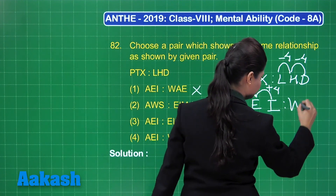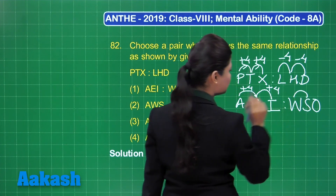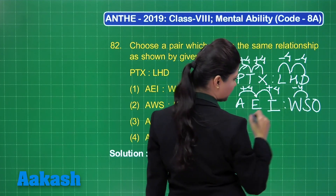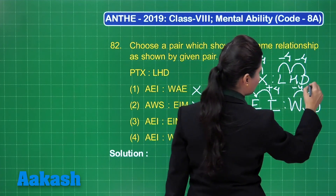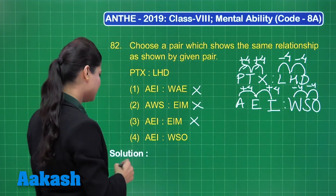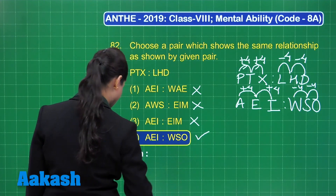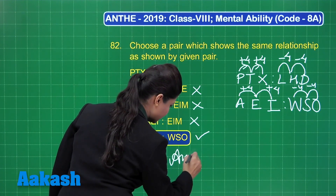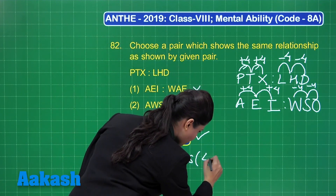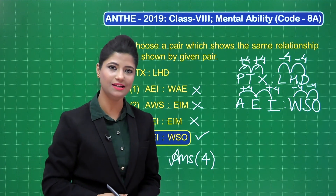Coming to WSO: to reach from S to W you go 4 alphabet positions ahead, meaning from W to S you go 4 positions backward. Similarly, from S to O also follows the same pattern of going 4 alphabet positions backward. So WSO is the correct answer — option number 4. This given pattern and pair follow the same relationship as the pair above. The answer is option number 4.